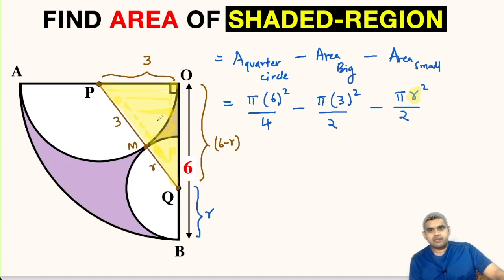Now let us apply Pythagorean theorem in this triangle. So the hypotenuse squared, that is PQ squared, so that is (3 + r)² = (6 - r)² + 3².